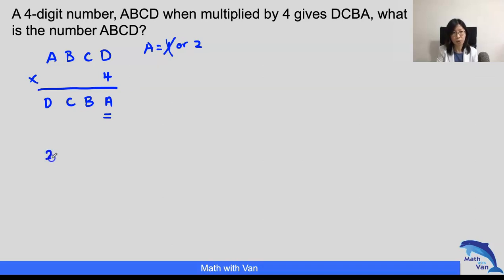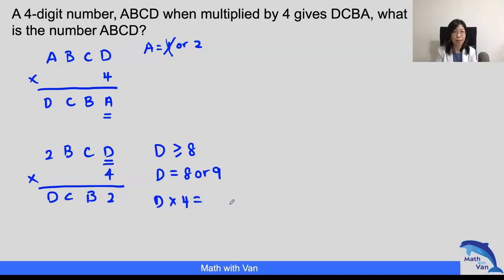If A is 2, let's write out here: 2 B C D, and then we times 4 to give us something with 2. Now which is the next most obvious? Looking at this, now that we know the thousands, 2 times 4 is to give us D. 2 times 4 equals to 8, so D must be either greater or equal to 8. Since there's no carryover, D must be either 8 or 9. We have to confirm that with the other D here. D times 4 must give me a number that ends with 2.